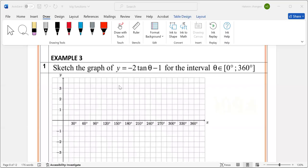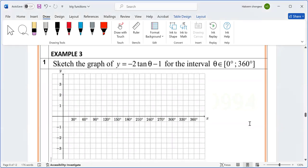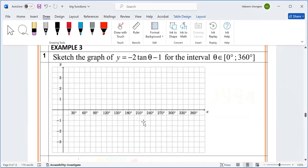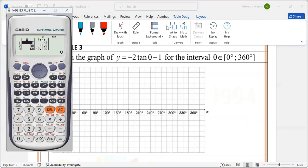Given the graph y = -2tan(θ) - 1, the goal is to draw the graph from 0° up until 360°. By now we know using our calculator, let's go to our calculator.